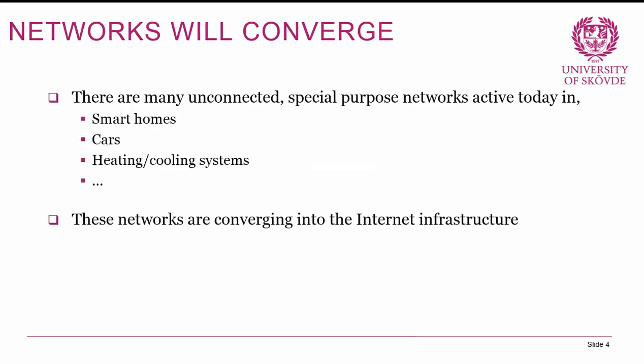Networks will converge onto a common network infrastructure. There are still many unconnected special-purpose networks active in, for instance, smart homes, modern cars, heating and cooling systems, and lock systems for apartment buildings. These networks are converging into the network infrastructure, giving us a lot more devices that we need to handle.